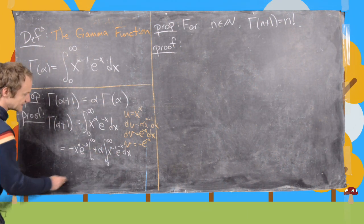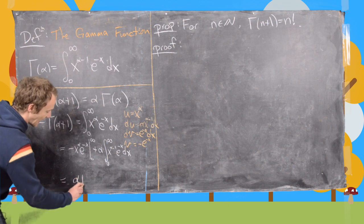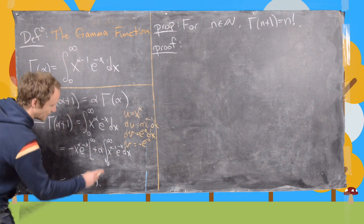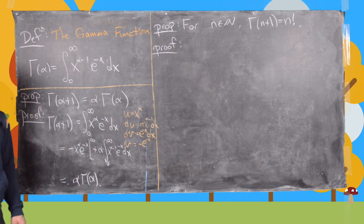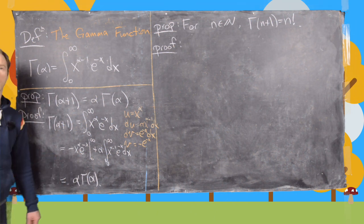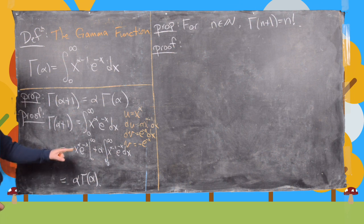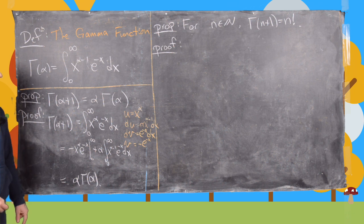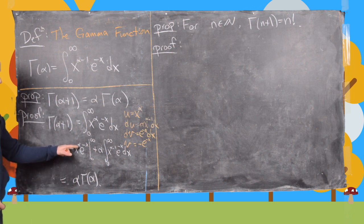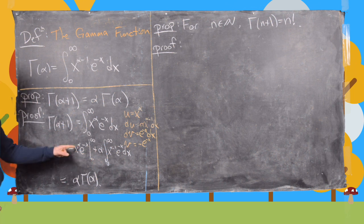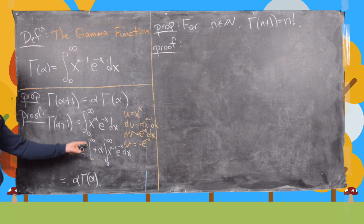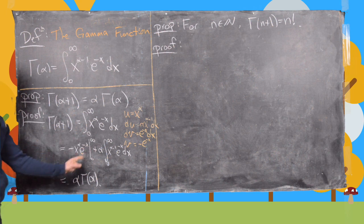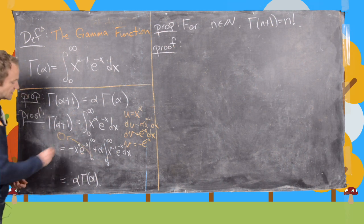Notice that this integral is exactly alpha times gamma of alpha, since it is the gamma function evaluated at alpha. We just need to argue why the boundary term is 0. Taking alpha bigger than 0, when you plug in x equals 0 you get 0, and when you take the limit as x goes to infinity, the exponential term drives everything to 0. So the boundary term is 0.